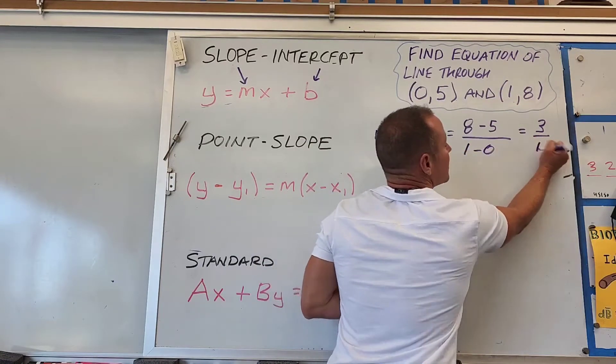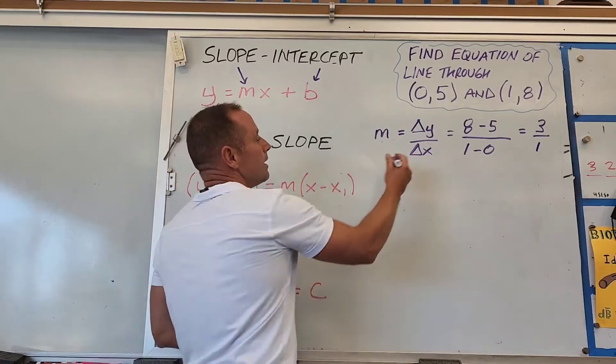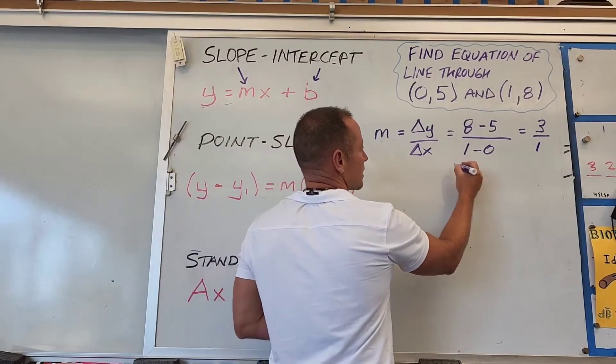The change in x-coordinate is 1, so the slope of this line is 3 over 1, which equals 3.